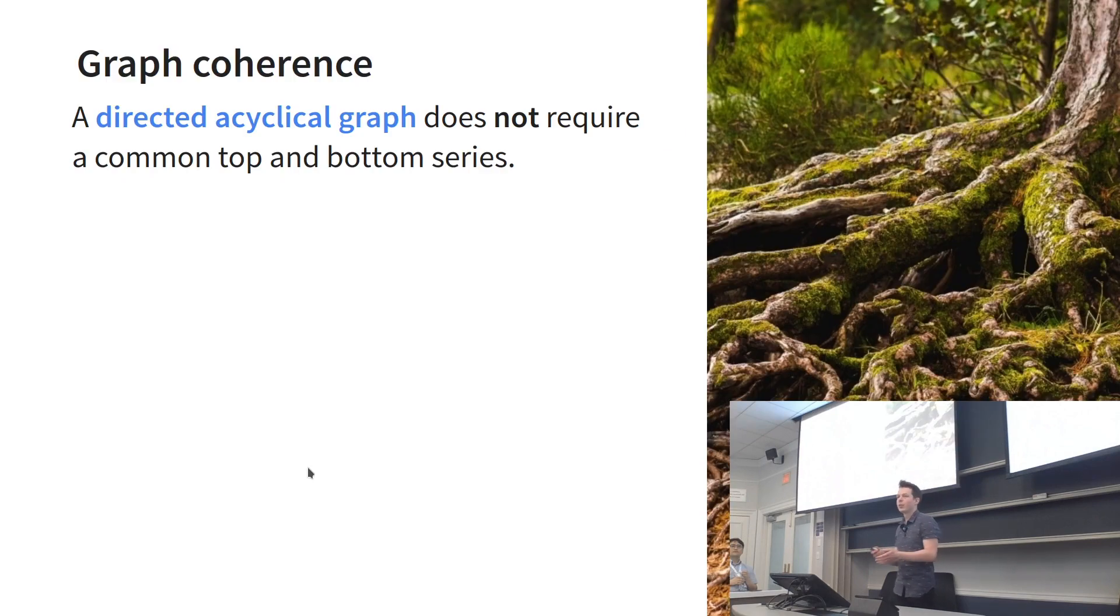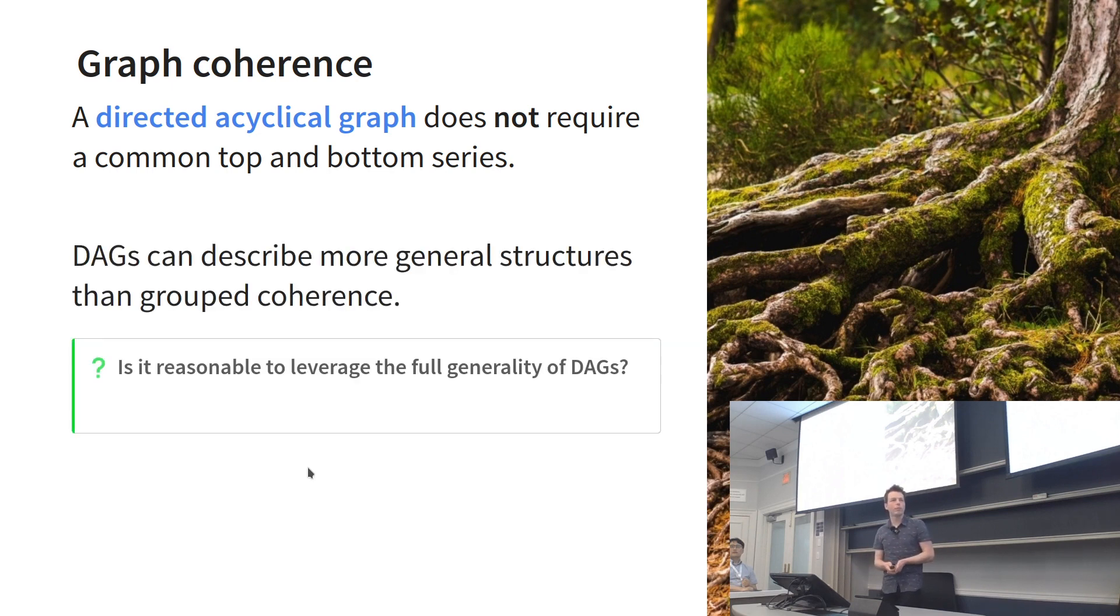Now for the new stuff. What about graph coherence? We saw that grouped coherence required the top and bottom series to be the same, to share a common identifier. But the DAG doesn't require the same top and bottom level series. What if we relax this constraint? This will be a more general structure, but is it reasonable to leverage this more general behavior? Yes, and this is why.